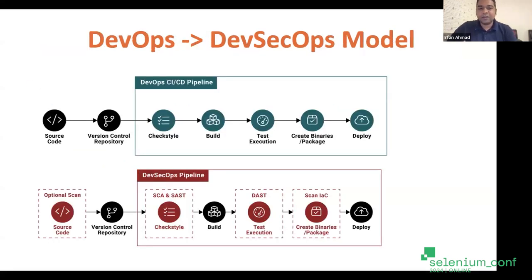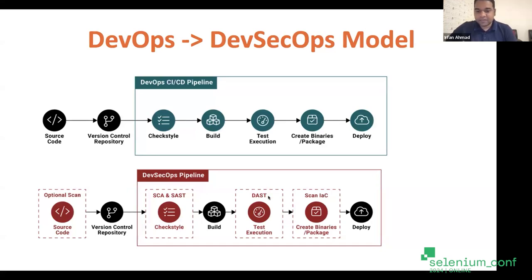This new model is the DevSecOps model. In a typical DevOps cycle, there's source code, version control, build and test execution, and then you deploy. The difference in DevSecOps is that there is an additional SAST step - source code analysis - added as part of this cycle, and DAST - Dynamic Application Security Testing - added as part of test execution. We'll focus on this DAST part and how we can do it as part of our end-to-end automation testing with Selenium. The model we prefer is the DevSecOps model.